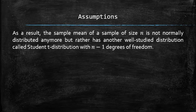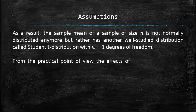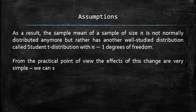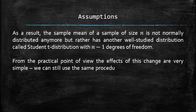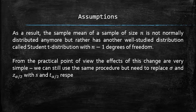From the practical point of view, the effects of this change are very simple. We can still use the same procedure, but need to replace sigma and z alpha over 2 with s and t alpha over 2 respectively.